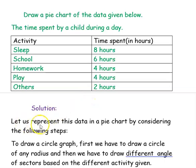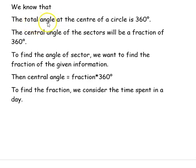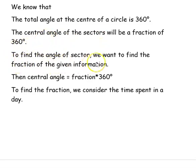Now, solution. Let us represent this data in a pie chart by considering the following steps. To draw a circle graph, first we have to draw a circle of any radius, and then we have to draw different angle sectors based on the different activities given. We know that the total angle at the center of a circle is 360 degrees. We want to split the 360 degrees into different angles — we call these central angles. The central angle of each sector will be a fraction of 360 degrees.